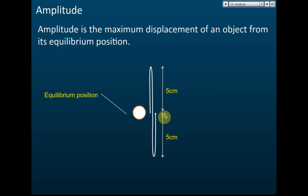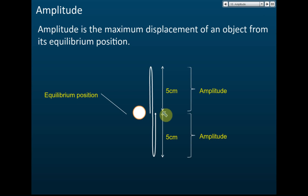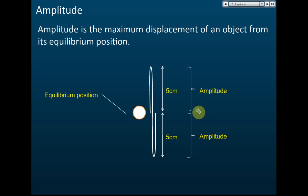From the equilibrium position, the maximum height is 5 cm, and the lowest point from the equilibrium position is also 5 cm. This is called amplitude — it is the maximum displacement, the furthest distance the ball can move from the equilibrium position.